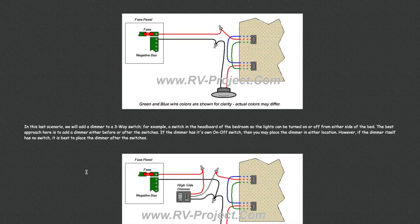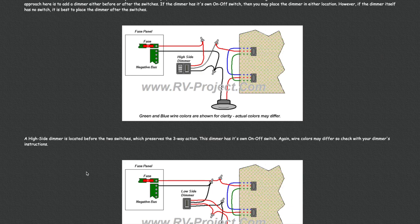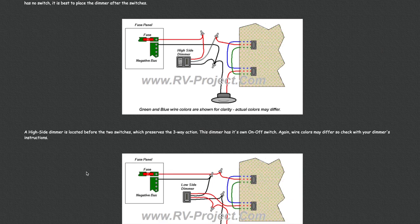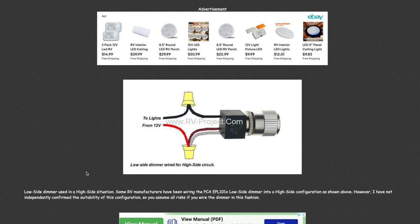Then in the last scenario, I replace both switches in the headboard with a high side dimmer and remote switch. And finally, I show how the PCA EPL101X, which is a very popular low side dimmer, how it can be modified as a high side dimmer. Again, this is just a quick representation of some of the features on my website, and I encourage you to go to the website if you have more questions on dimmers.